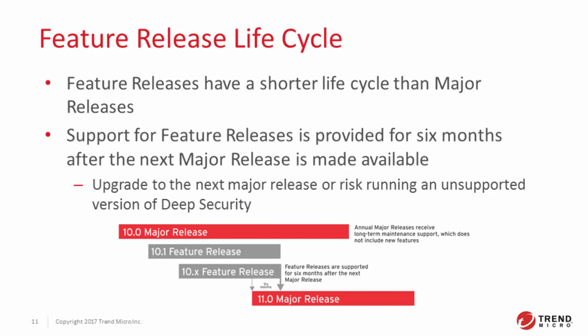Deep Security feature releases have a shorter lifecycle than major releases. Organizations should upgrade to the next major release when it becomes available or risk running a non-supported version of Deep Security. To ease the challenges of scheduling the upgrade in a production environment, support for feature releases is provided for six months after the next major release is made available. Feature releases do not affect the full lifecycle and support models of the major release versions, which will continue to receive hot fixes and maintenance updates as usual.